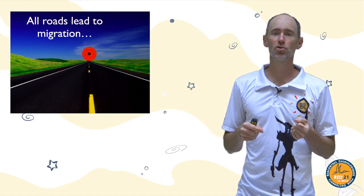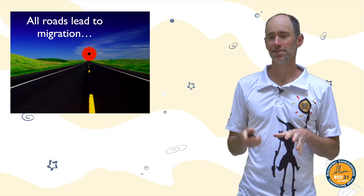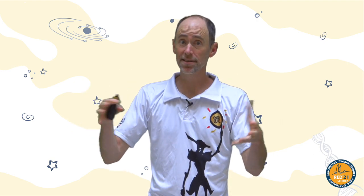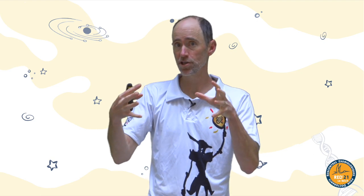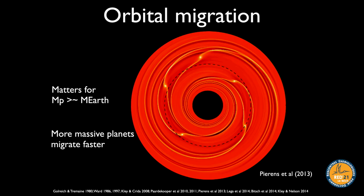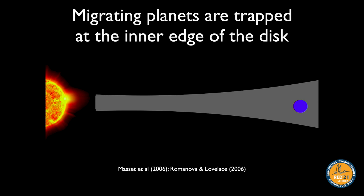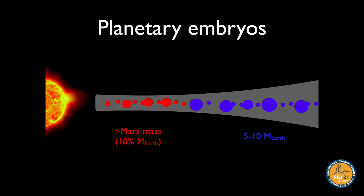Regardless of where they form, all roads lead to migration. Things grow fast and must grow faster than the gas disc disappears, so there's a window where large planets interact with the gaseous disc. When they do, they launch spiral density waves that torque the planet's orbit, causing it to shrink. For planets ending up on very close-in orbits, the orbits mostly shrink. More massive things migrate a bit faster. Importantly, migration doesn't cause planets to fall into stars — they get trapped at the inner edge of the disc.